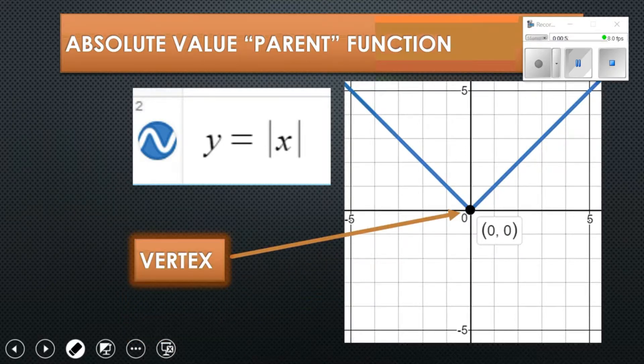When we talk about transforming an absolute value parent function we always talk about it in terms of the vertex. In the case of the parent function y equals absolute value of x, the vertex is 0, 0.